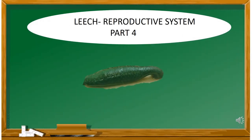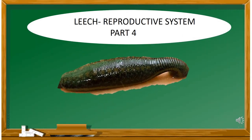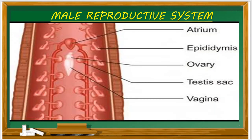In this video we shall learn about the Leech Reproductive System. The male reproductive system of leech has 11 pairs of testis. The testis are found within spherical sacs called testis sacs. One pair in each segment from segment 12 to 22, making 11 pairs of testis in total. Each pair of testis starts from the 12th segment to the 22nd segment.